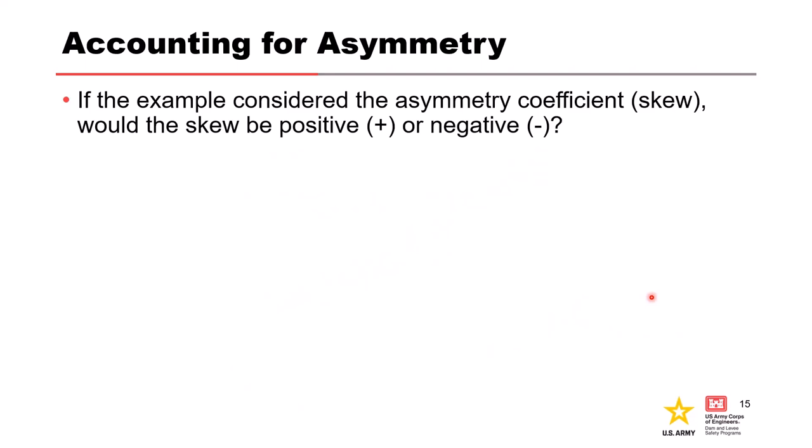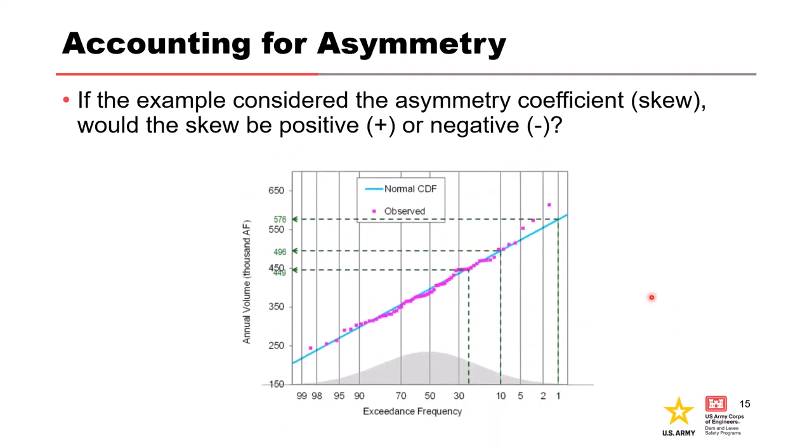All right now we're going to talk about accounting for asymmetry. In this example we assumed at the beginning a symmetrical probability density function which results in the skew of zero. If we would have considered asymmetry would the skew coefficient be positive or negative do we think? So again we assumed a skew of zero to start with that's why we have this straight blue line.